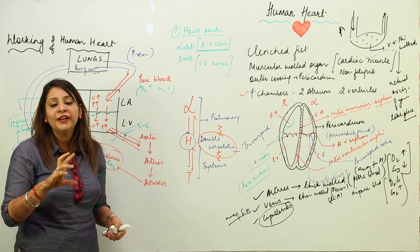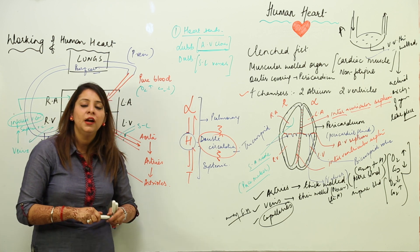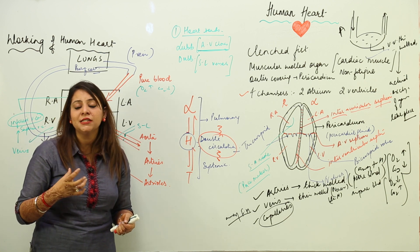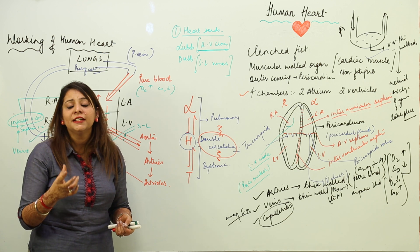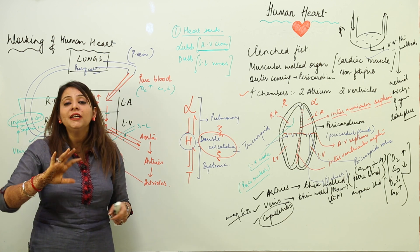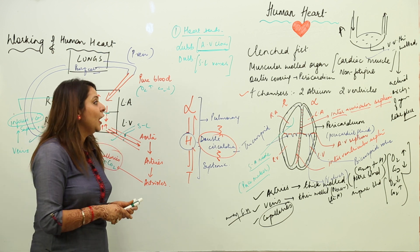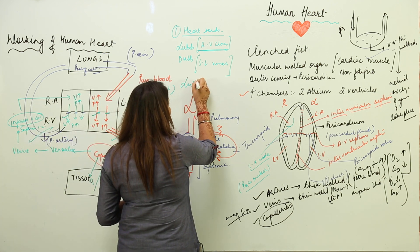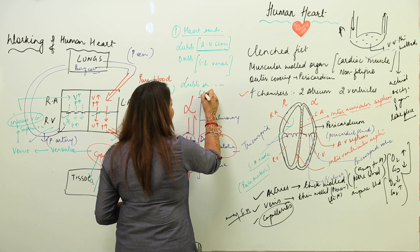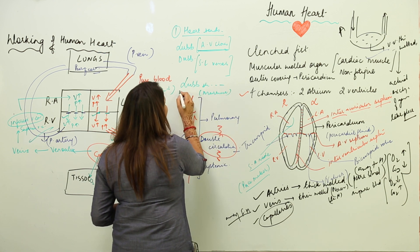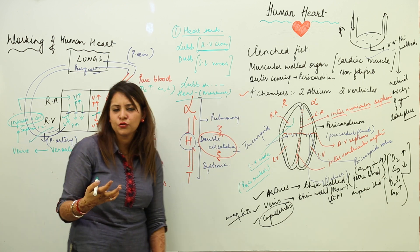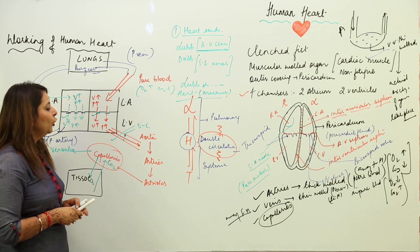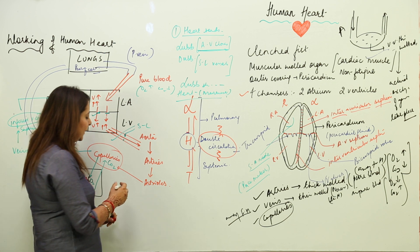When the semilunar valves of the aorta and pulmonary vessels close, they produce the sound 'dub'. A complete heart cycle consists of two sounds: lub dub. When you visit a doctor, they use a stethoscope to hear heart sounds. If there is any infection or respiratory disorder, the heart may produce an abnormal sound — this is called heart murmur, meaning there is some kind of issue prevailing inside your chest.